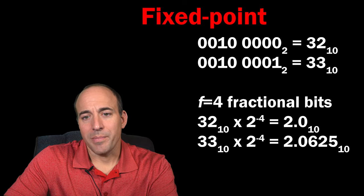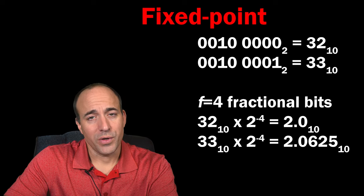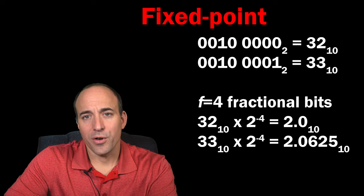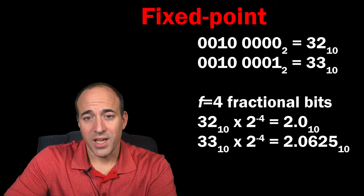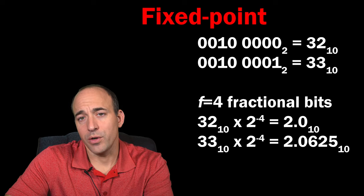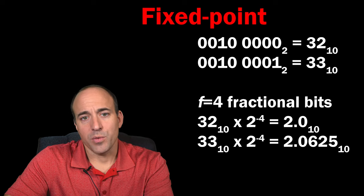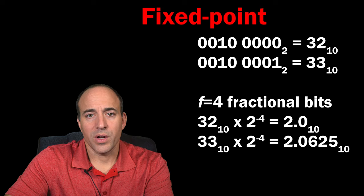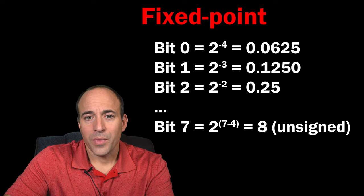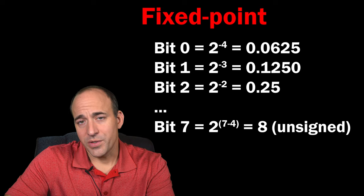If the 8-bit value contains the binary value 32, which is 00100000, then we must treat it as representing the value of 32 times 1/16, or the value of 2. Bit 0 carries a weight of 2 to the negative 4th power, or 1/16, which is 0.0625.